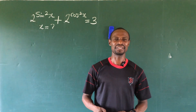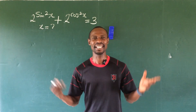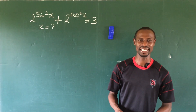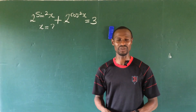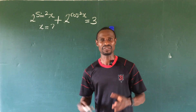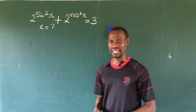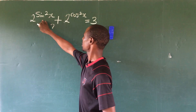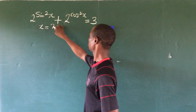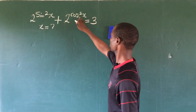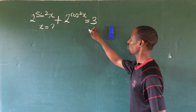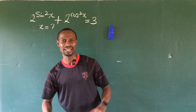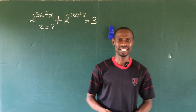Hello everyone, welcome to today's challenge. Here we have a challenge on the board and it's a trigonometrical equation from Math Olympiad. The question is: 2 to the power of sine squared x plus 2 to the power of cos squared x equals 3. What are the possible values of x?